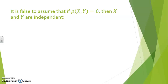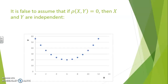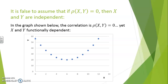It is false to assume that if a correlation coefficient is zero, then x and y are necessarily independent. Here is an example where x and y are clearly functionally dependent — the shape can be identified as a parabola, indicating a quadratic relationship. Despite the functional dependence between x and y, the correlation coefficient equals zero, simply because the relationship is non-linear. Correlation coefficients measure alignment along a linear expression, so if x and y are independent the coefficient will be zero, but the reverse is not true: a coefficient of zero does not necessarily imply that x and y are independent.